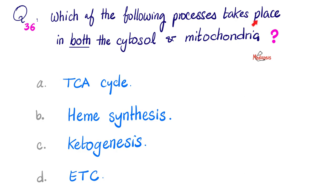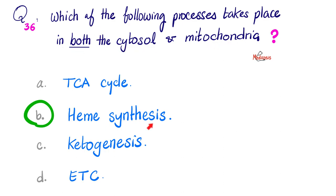Which of the following processes takes place in both the cytosol and the mitochondria? Is it the TCA cycle (Krebs cycle / tricarboxylic acid cycle / citric acid cycle), heme synthesis, ketogenesis, or the electron transport chain (oxidative phosphorylation)? Please pause. The correct answer is heme synthesis. Please write down the following three pathways which take place in both the cytoplasm and the mitochondria: number one, heme synthesis; number two, urea cycle; number three, gluconeogenesis.